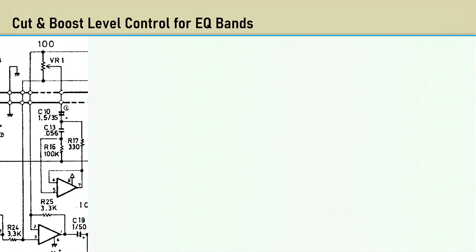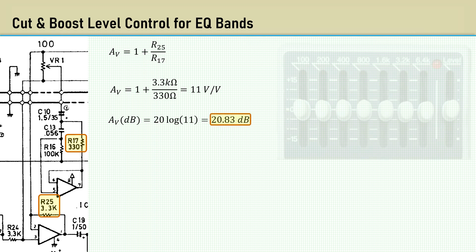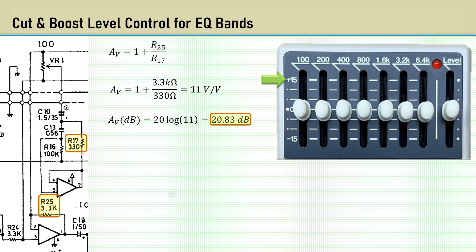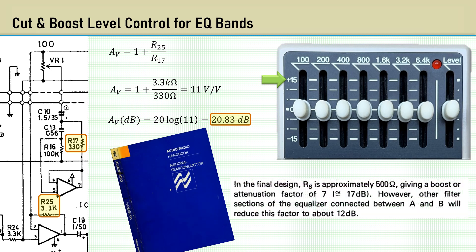Next, we will analyze the cut and boost level control for the various EQ bands. The voltage gain at full boost is 1 plus R25 over R17, which is 11, or 20.83 dB. This is more than the specified 15 dB. If you refer back to the 1980 National Semiconductor Audio-Radio Handbook, it talks about how other filter sections interact to reduce the effect of the cut and boost by about 5 dB. Therefore, the design values will need to be about 5 dB greater than what you desire.